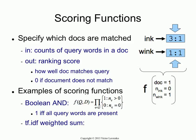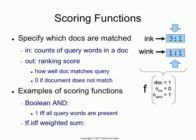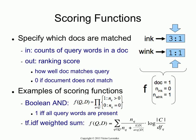The Boolean AND scoring function checks if all the query terms are present or not. If I used Boolean AND, it would return zero for all documents except document five, where both query terms occur. TF-IDF weighted sum, on the other hand, produces a non-zero value for all of those documents, because it doesn't matter if one query term is missing — as long as the other is present, you still get a non-zero score. Cosine and any other function you come up with is also a scoring function.